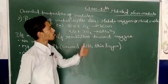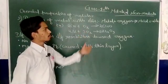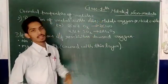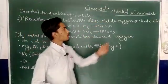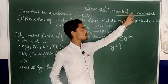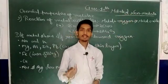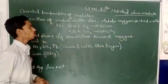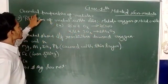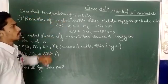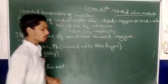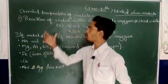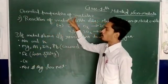Class 10, good morning all of you. Subject science, chapter 3 is metals and nonmetals. In the previous class, we have learned about what is metals, what is nonmetals, and what are the physical properties of these metals and nonmetals. Now we have taken a new topic: chemical properties of metals. Previous class physical properties, in this class we have learned about chemical properties of metals.